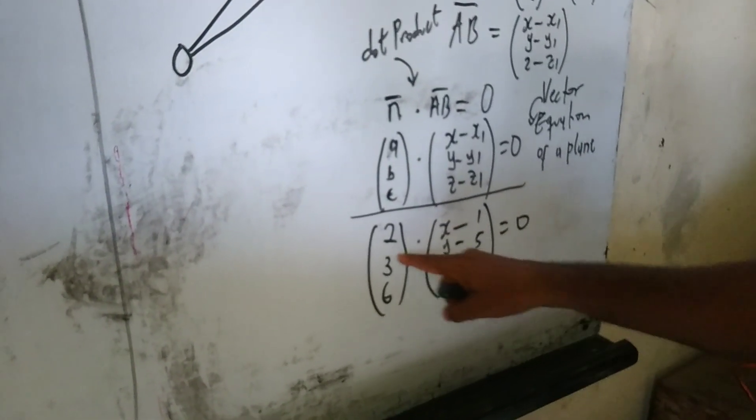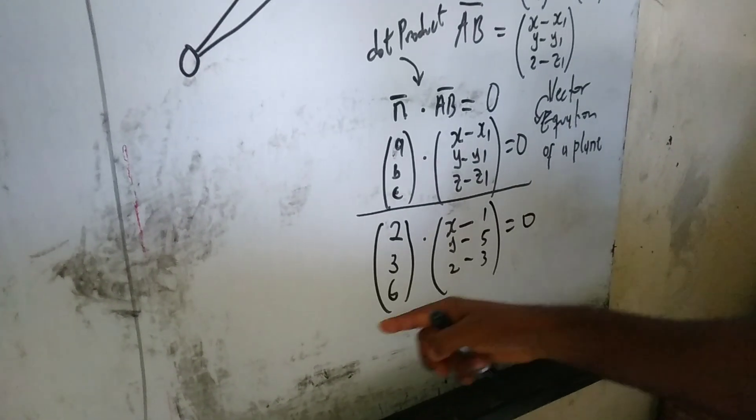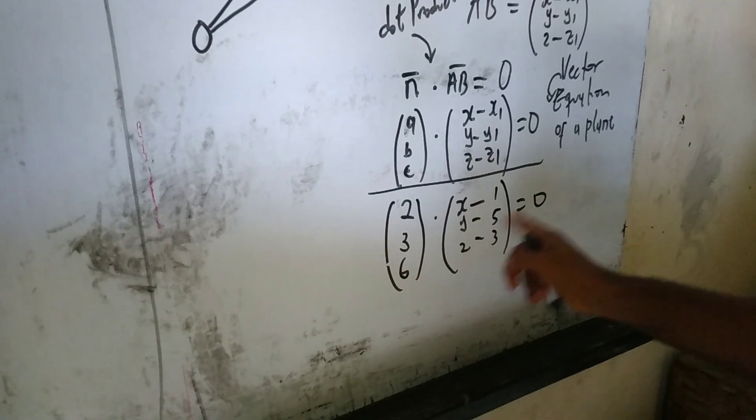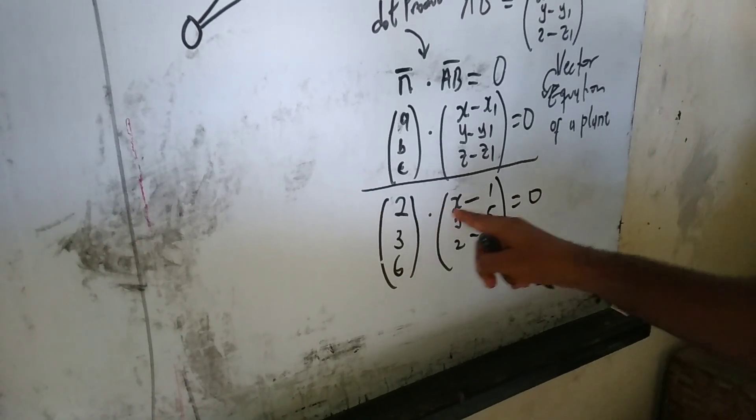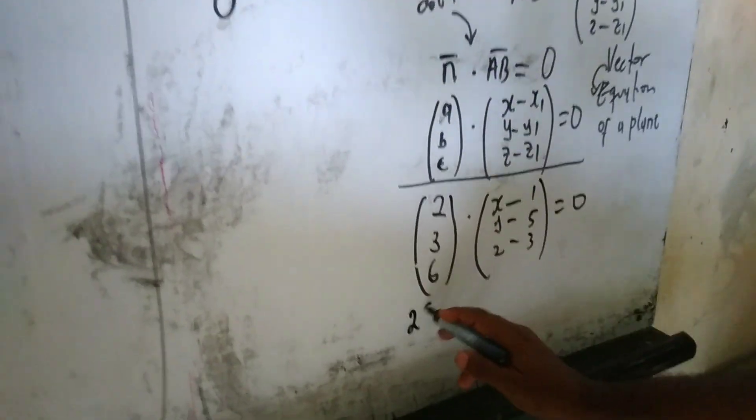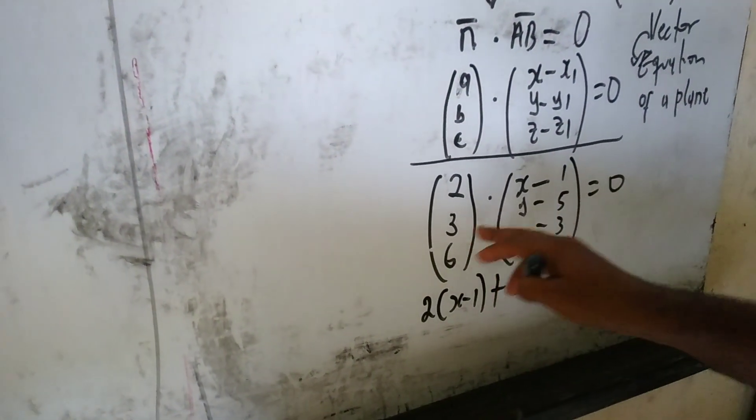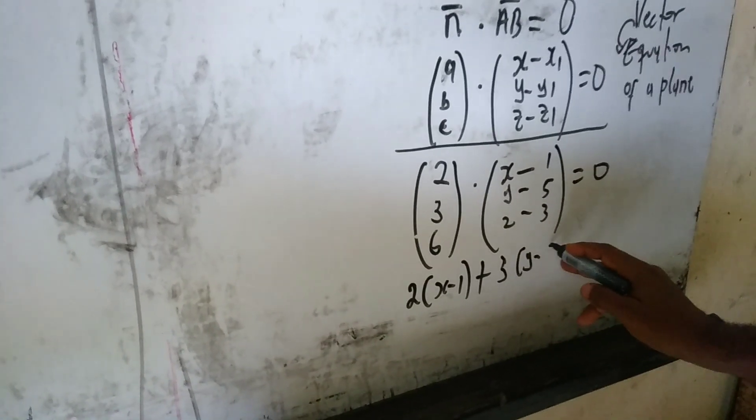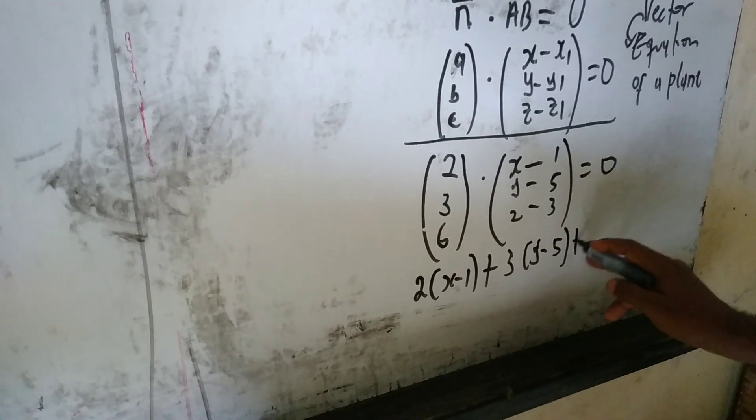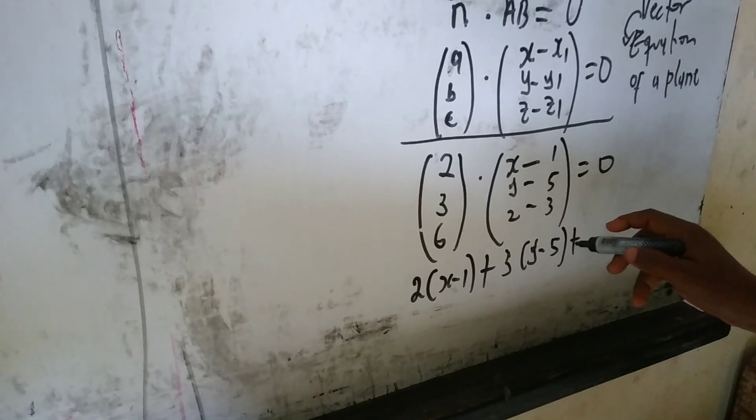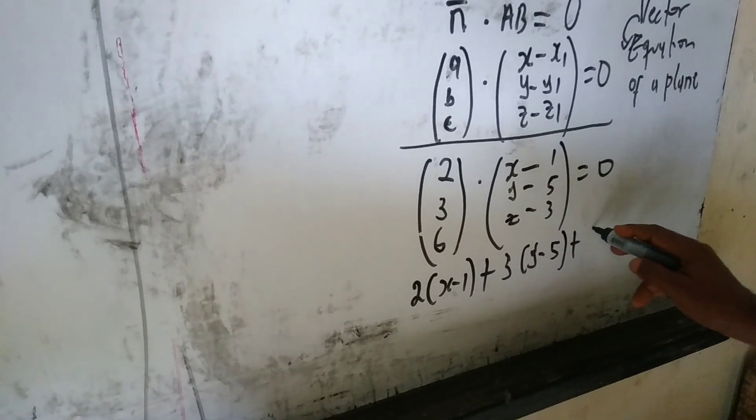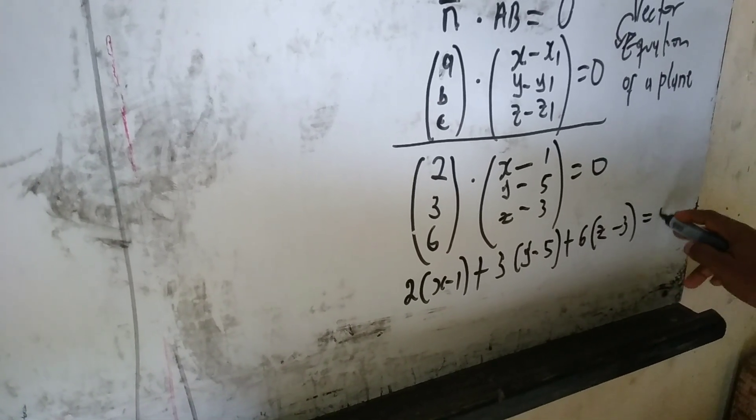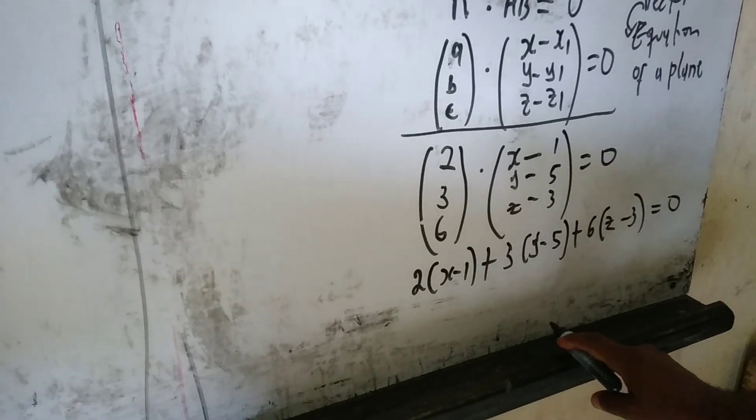Now, how do we do this dot product? We are going to use this one to multiply the vector and add it to the next subsequent one. So, starting from this one, I have 2 times X minus 1. Then, I add it to 3 times Y minus 5. Then, I add it to 6 times Z minus 3 is equal to 0.